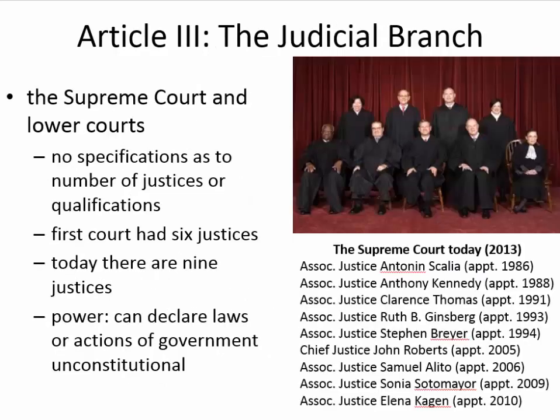Article 3 addresses the judicial branch — the Supreme Court and the lower courts. There are really no specifications as to the number of justices or what would qualify you. The very first court had six justices; today there are nine, so there won't be any tie votes — it's an odd number. There have actually been many five-to-four decisions on the Supreme Court. The biggest power of the judicial branch is that they can declare laws or actions of government unconstitutional — and the minute the court declares something unconstitutional, it is null and void.